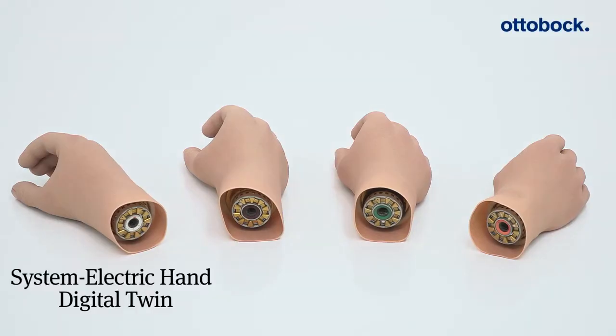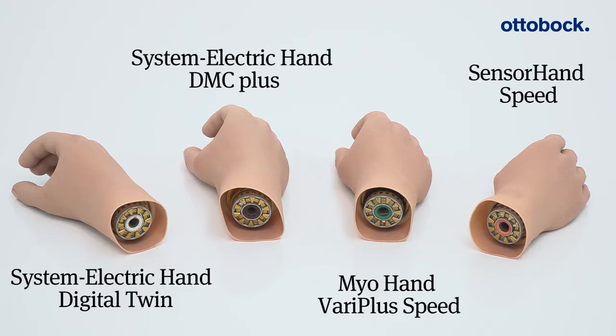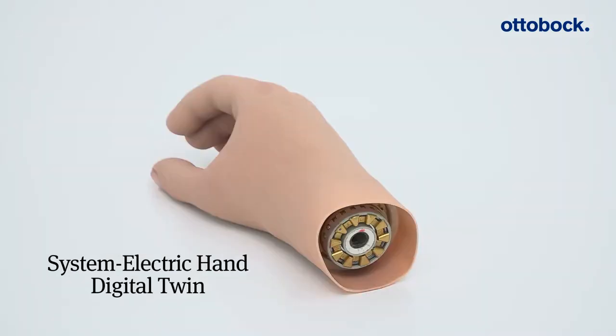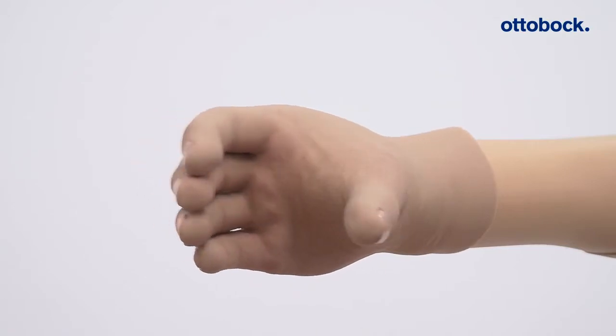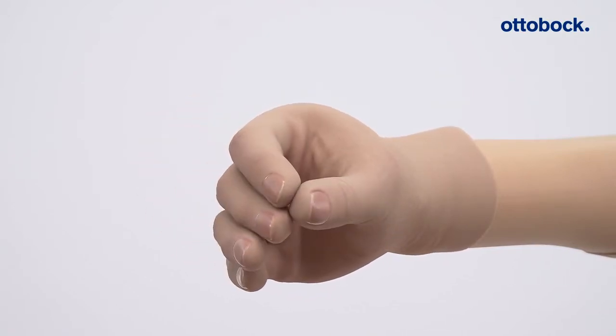The reliable Myo Bock system contains four different types of system electric hands which combine high functionality with natural appearance. The Digital Twin hand is a robust starter model for fitting with myoelectric hand prosthesis. It opens and closes with a constant speed of 110 millimeters per second.